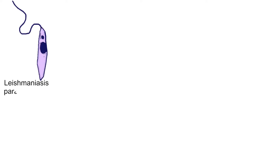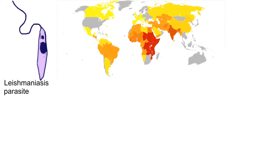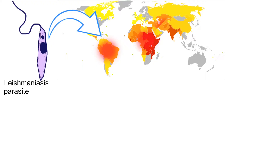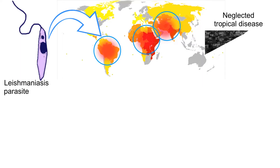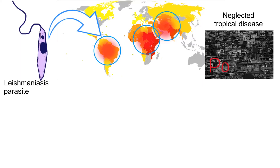Leishmaniasis is a parasitic disease most commonly found in the tropics and subtropics. It is classified as a neglected tropical disease, which means it mostly affects poor people with low socio-economic status.